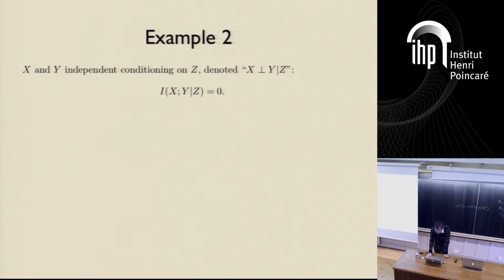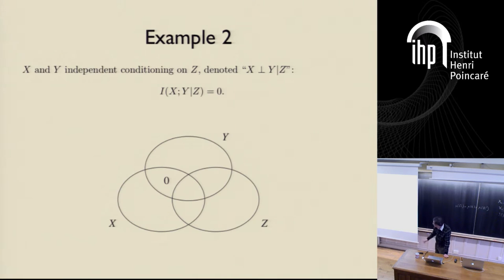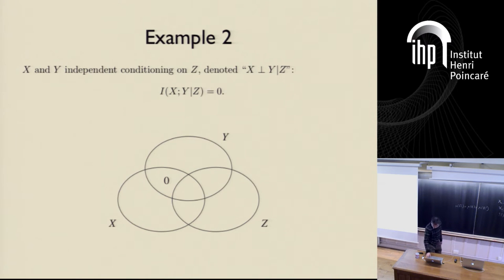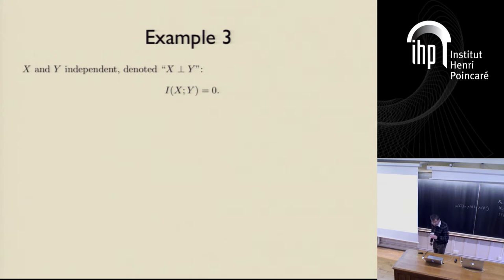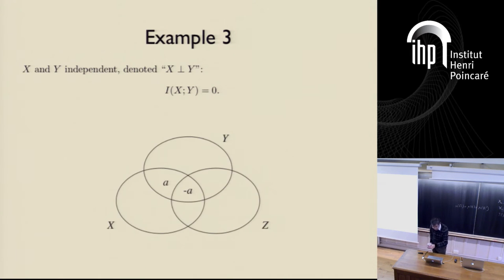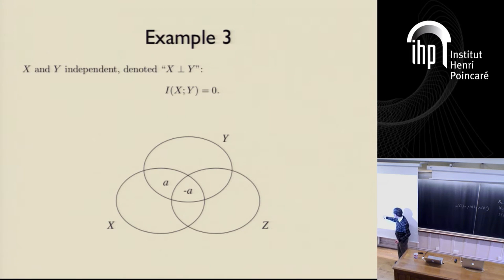Another example: X and Y independent conditioning on Z. We have actually seen something like this before — it's just a Markov chain, and we force this atom to zero. Now let's take another look: X independent of Y. If X is independent of Y, then the intersection of X and Y must equal zero, so we call this a and this must be minus a. But they are not necessarily equal to zero — so in this case we are not able to force any atoms to zero. The question is why.